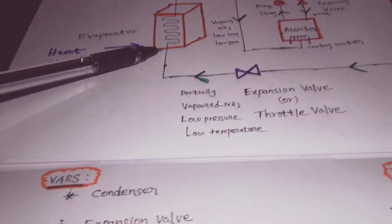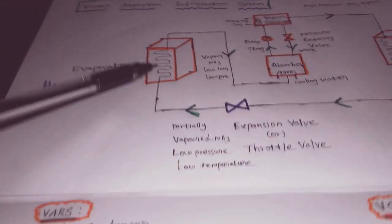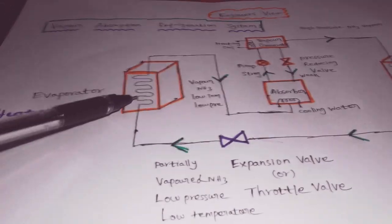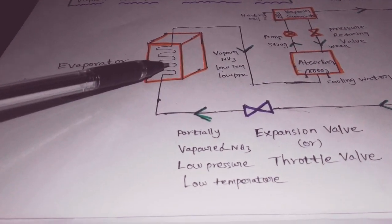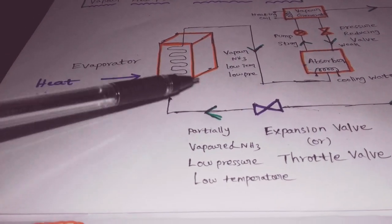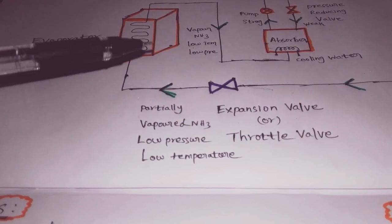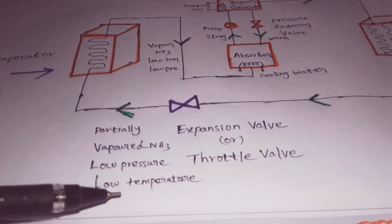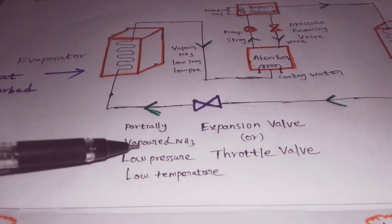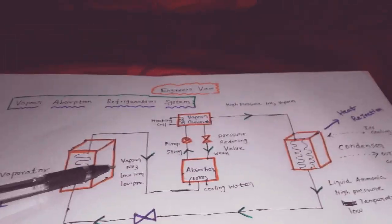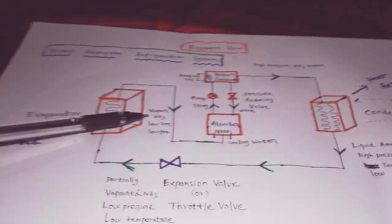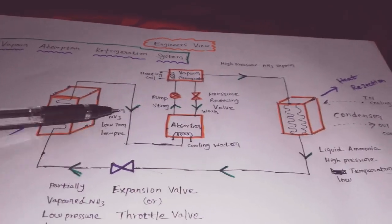The partially evaporated ammonia enters the evaporator, where heat exchange takes place. The evaporator absorbs heat from the surroundings, providing the cooling effect. As it absorbs heat, the ammonia fully evaporates, becoming fully vapor ammonia at low pressure and low temperature.